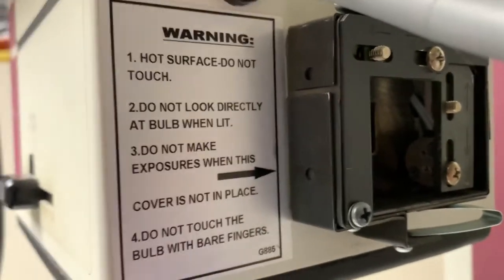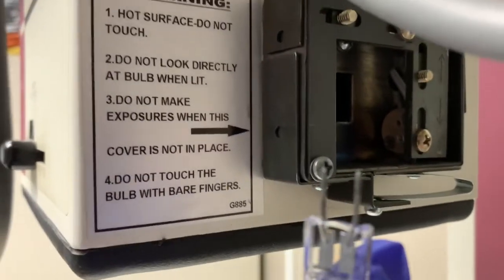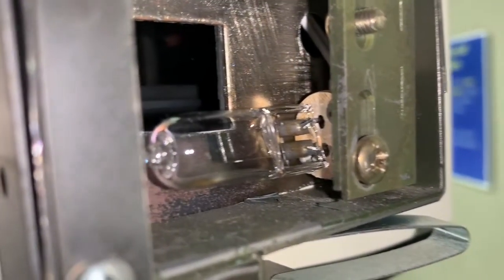Install the bulb by putting the two prongs into the holes in the socket. Make sure the bulb is pushed all the way in and sits level.